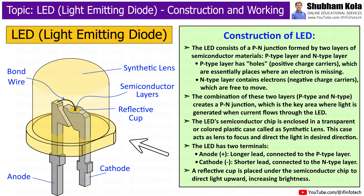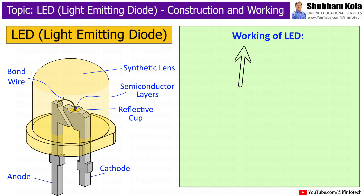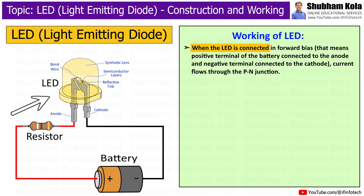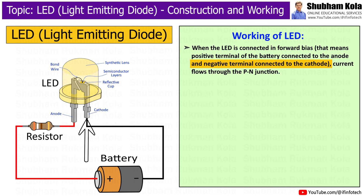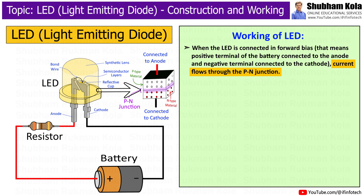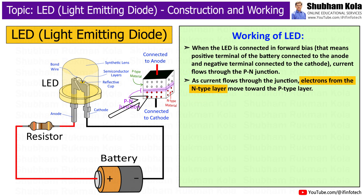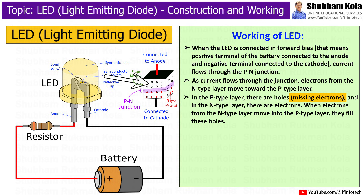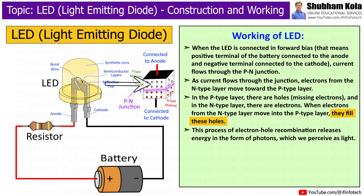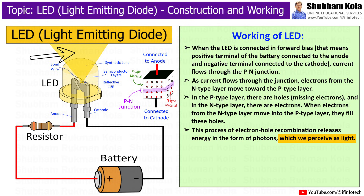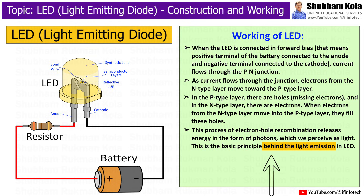Now that we have covered the construction of the Light Emitting Diode, let's move on to how it works. When the LED is connected in forward bias, i.e. the positive terminal of the battery connected to the anode and the negative terminal connected to the cathode, current flows through the p-n junction. As current flows through the junction, electrons from the n-type layer move towards the p-type layer. In the p-type layer there are holes, i.e. missing electrons, and in the n-type layer there are electrons. When electrons from the n-type layer move into the p-type layer, they fill these holes. This process of electron-hole recombination releases energy in the form of photons, which we perceive as light. This is the basic principle behind the light emission in an LED.